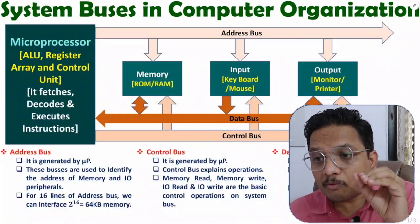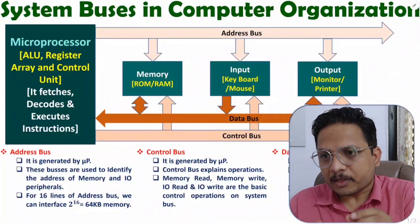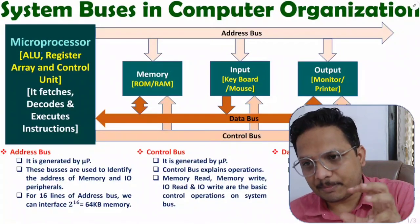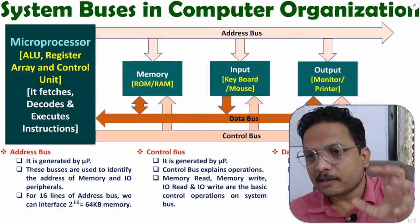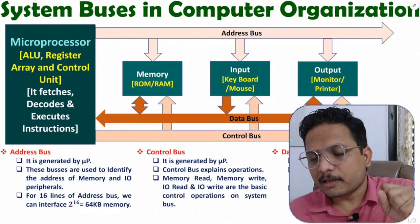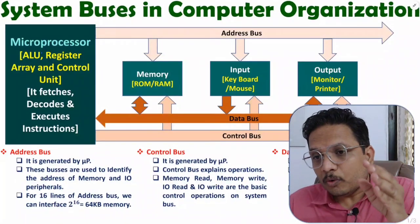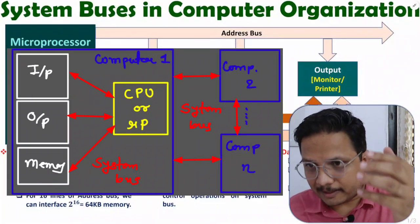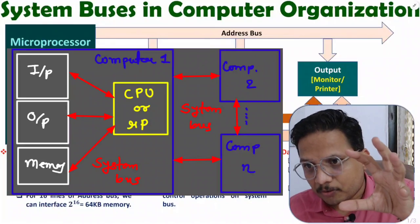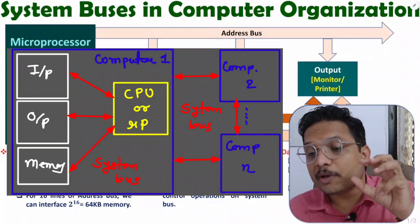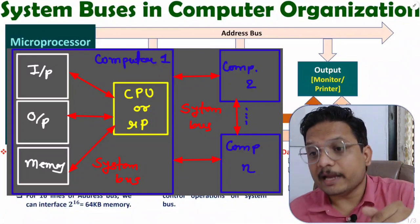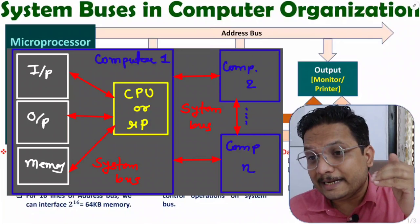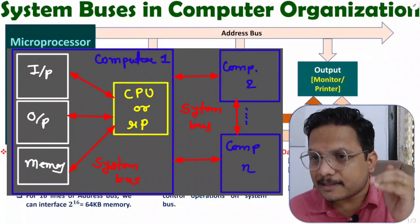First of all, you need to understand why we need to have system bus. When we talk about a computer, the computer's heart is referred to as the CPU, the central processing unit, and with CPU we have the microprocessor. When you work with a computer, you are not only working with the CPU — you are also working with memory, input devices, and output devices. For that interfacing, we need to access the system bus.